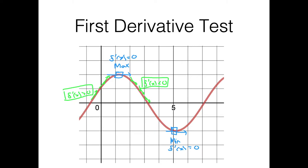Now let's look at the minimum. What's happening to the left of this minimum? Well, I'm still decreasing, so the first derivative is still less than zero. But immediately after going through the minimum, the slope of the tangent line has flipped signs again — we're increasing, and f prime of x is now greater than zero.